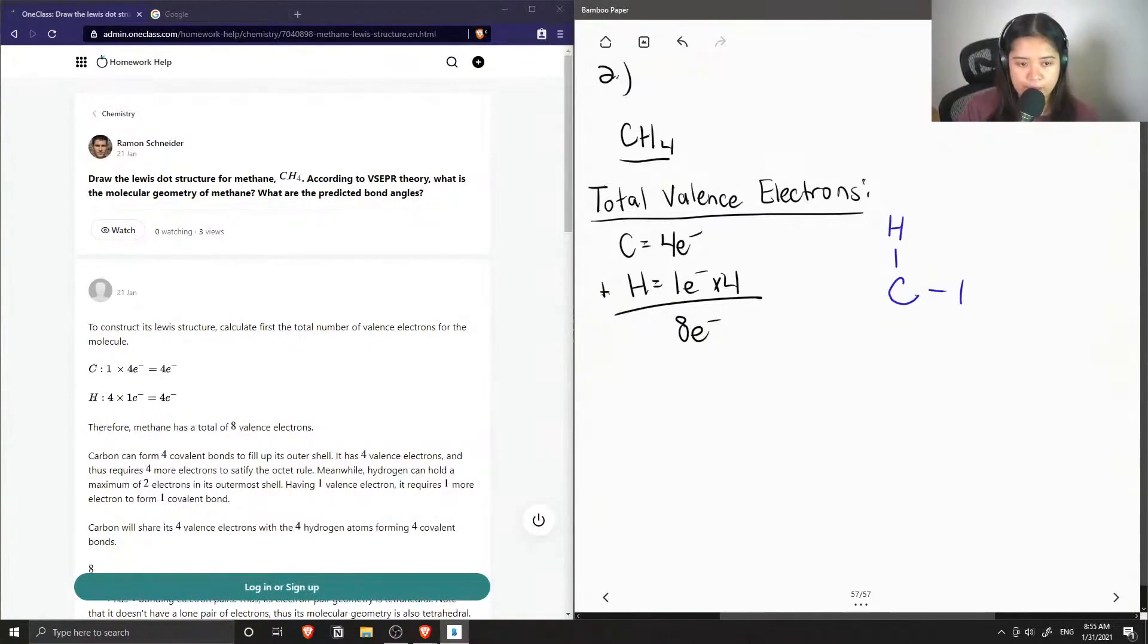We can draw four single bonds to hydrogen. If we count the electrons we've drawn so far, with each bond containing two bonding electrons, we already have the eight electrons needed for the structure.